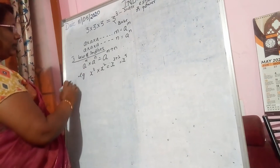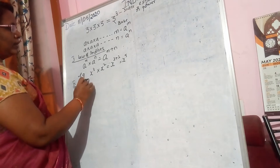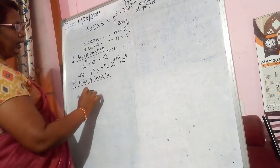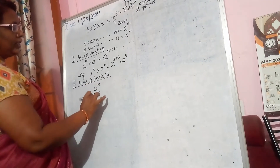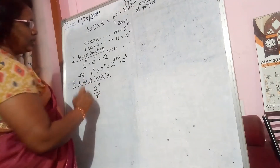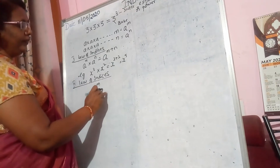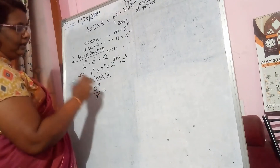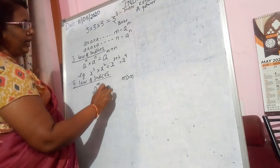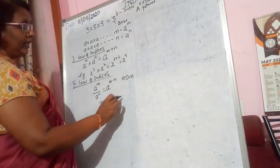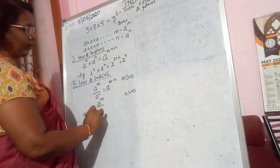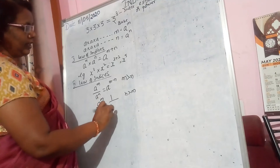The second law is the quotient law. When you divide a raised to the power of m by a raised to the power of n, the result depends on the values of m and n. If m is greater than n, it is a raised to the power of m minus n. If n is greater than m, then it becomes 1 by a raised to the power of n minus m.